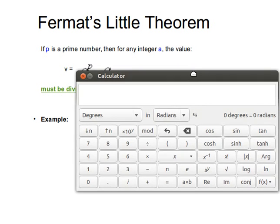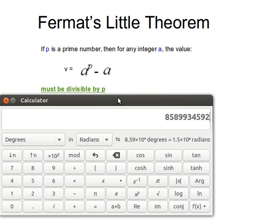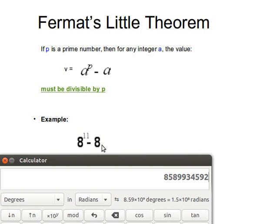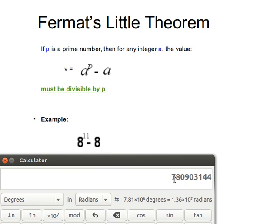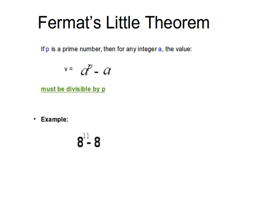So I said 8 to the power 11 — I'll compute 8 to the power 11, then subtract 8, then divide by 11. If 11 divides that number evenly, we understand that 11 is a prime number. We know already 11 is prime, but if that number P were too large, it would be very difficult, and we'll come to a way of dealing with those large exponents in one of my next videos.